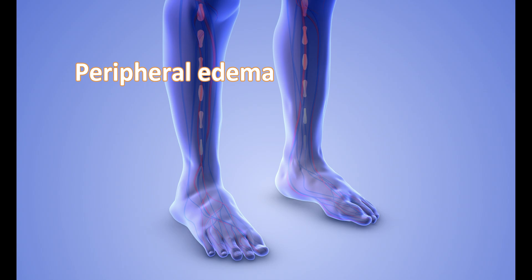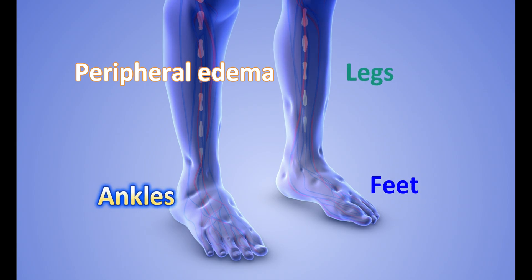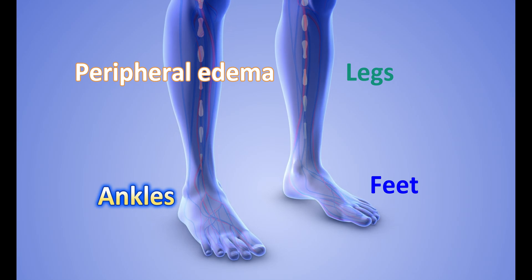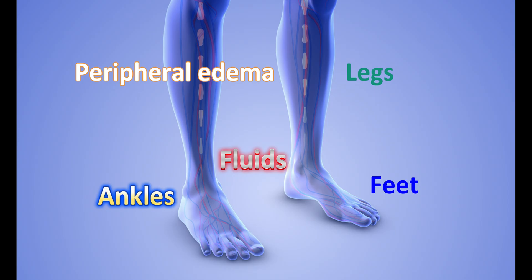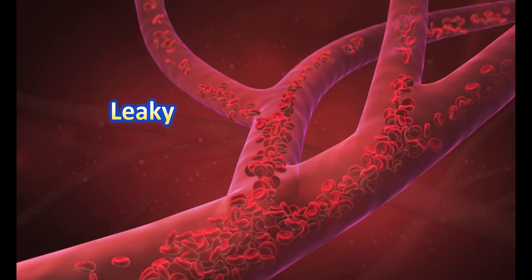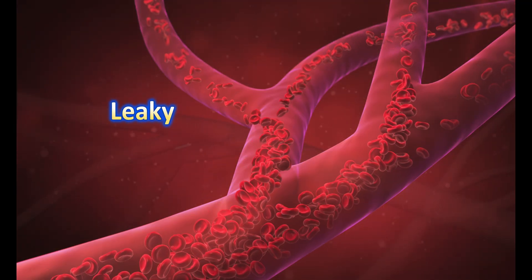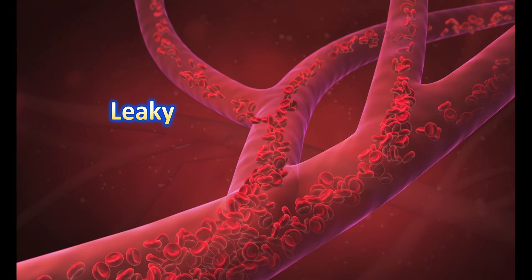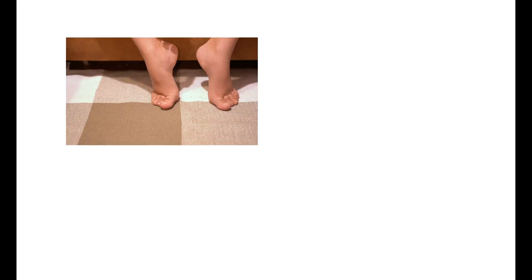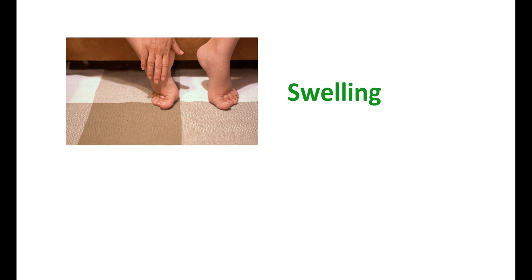Peripheral edema results in the swelling of your legs, feet, and ankles. It may also involve the swelling of your hands and arms in a few cases. It is due to the build-up of fluids surrounding the tissues in your legs and arms. When your blood vessels are leaky in nature, a larger amount of fluid can pass through and accumulate in the surrounding tissues, resulting in swelling at the lower extremities.